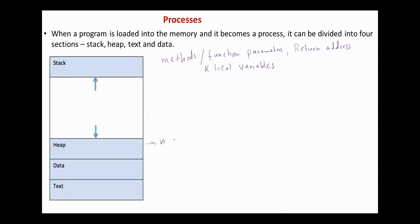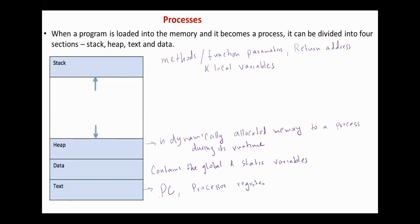Heap is dynamically allocated memory to a process during its runtime. Data section contains the global and static variables. And the text section includes the current activity represented by the value of program counter and the contents of processor registers.